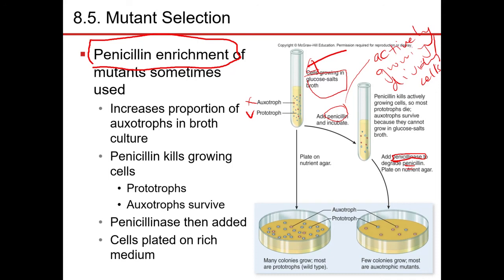This might be puzzling — why do you need to stop the action of penicillin? Since penicillin is targeting the wild type prototrophs and the auxotrophs are not harmed, one would think there is no need to stop it; just let it kill the wild type prototrophs and let the auxotrophs survive. However, there is a trick here.